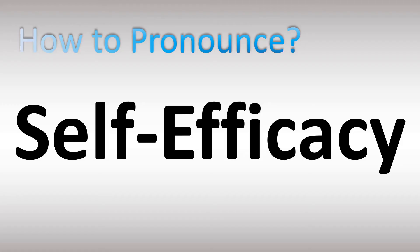Efficacy — four syllables here: E, Fe, C, C. With a stress on the first syllable and the E syllable. So both British and American pronunciations are similar here — UK or US. Self. Efficacy.